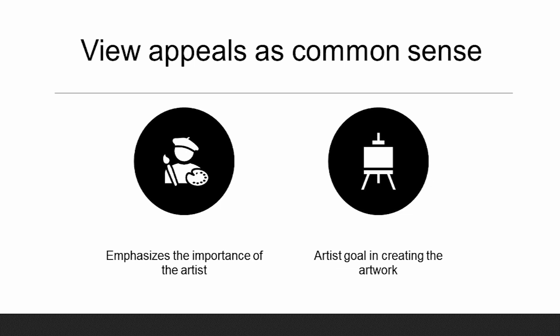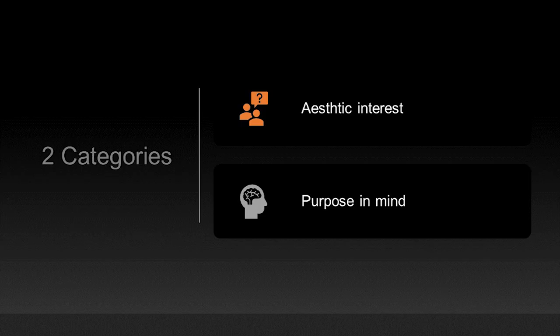The first — emphasizing the importance of the artist — is all about the artist, not just the artwork; it concerns the value of the artist as a person. The second — the artist's role in creating the artwork — is about what the artist tries to do or bring out from the artwork.